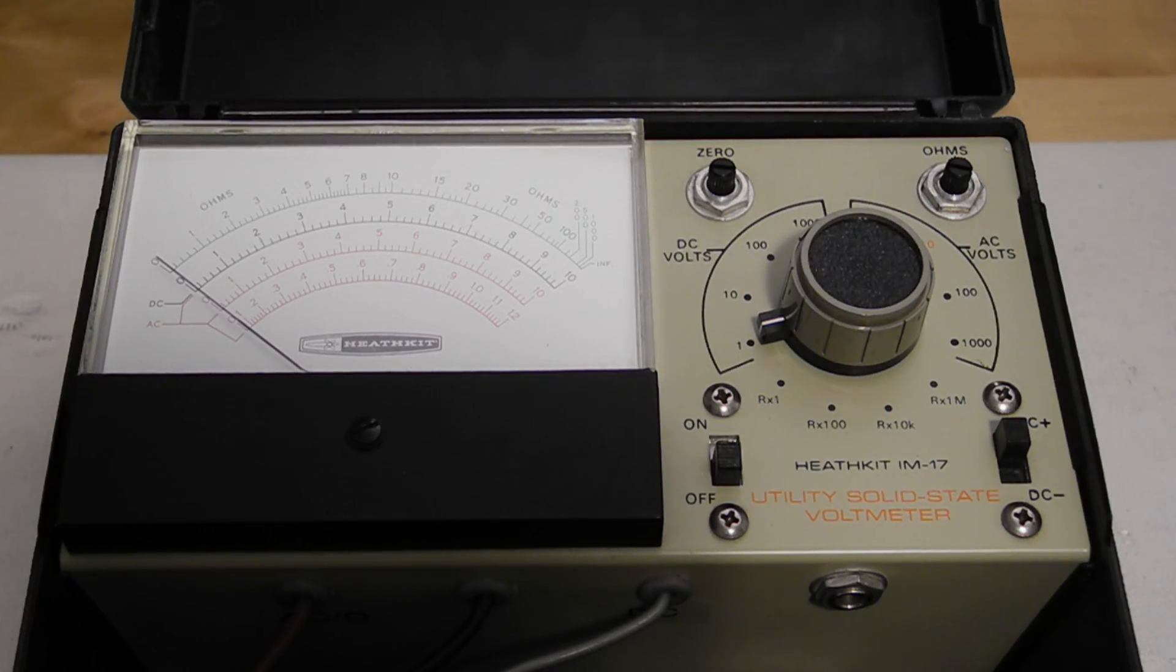On off is the power switch. Current drain is low on the voltage ranges when the test leads are not connected, so it's safe to leave turned on during extended periods of use. The resistance ranges do drain the battery so it should not be left on ohms for long periods of time. The off position also shorts the meter movement which damps it and provides some protection against physical shocks.